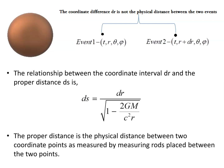The relationship between the coordinate interval dr and the proper distance ds comes from the line element, and this term is the g_rr component of the Schwarzschild metric. The proper distance is the physical distance between two coordinate points as measured by measuring rods placed between the two points — you measure out your rods, whose lengths are known, fixed between the two locations, giving the proper distance.